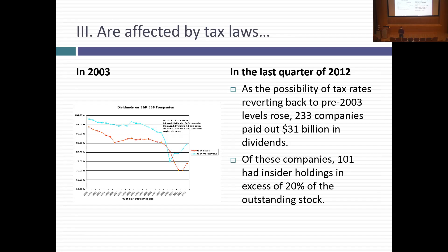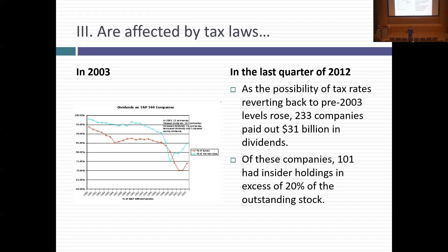When a company pays a dividend, you report it as ordinary income and get taxed on it. The other way you make money as an equity investor is price appreciation — and historically in the US, you only get taxed on that when you sell the shares. Historically, dividends were treated as ordinary income while capital gains were taxed at lower rates, so for almost eight decades in the US, the two were taxed at different rates.